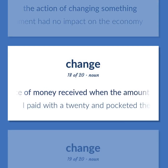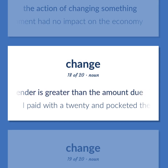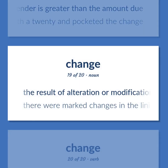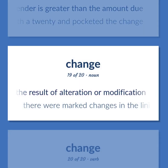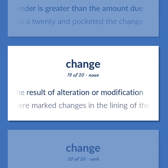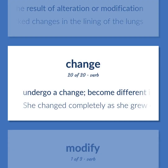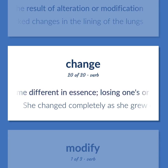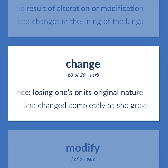The balance of money received when the amount you tender is greater than the amount due — I paid with a twenty and pocketed the change. The result of alteration or modification — there were marked changes in the lining of the lungs. Undergo a change; become different in essence, losing one's original nature — she changed completely as she grew older.